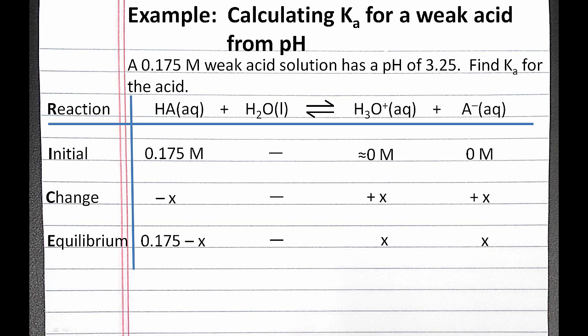So we can use this value of x to calculate the equilibrium concentrations of all three species. Our 0.175 minus x is 0.1744. And the concentration of both hydronium and the conjugate base, A minus, are 5.62 times 10 to the negative 4th.